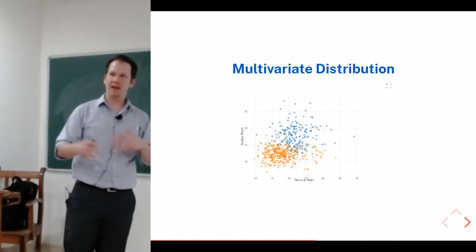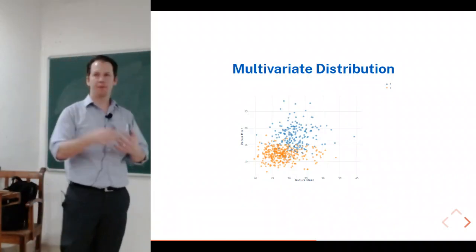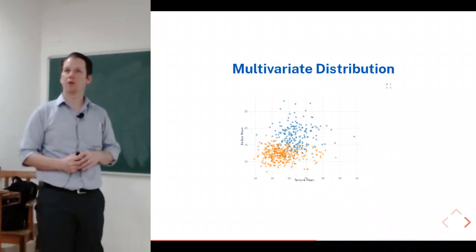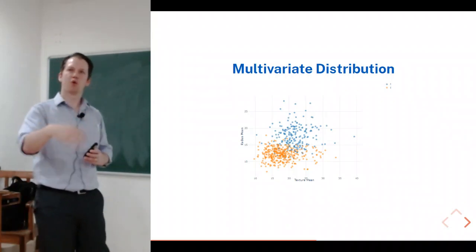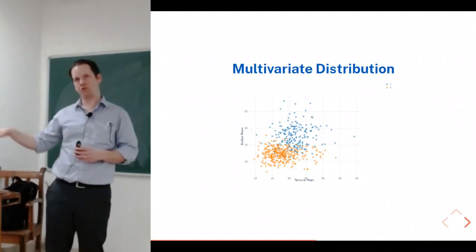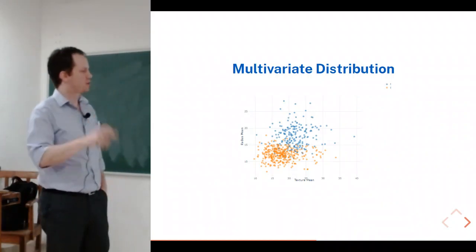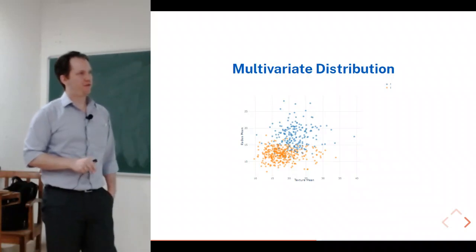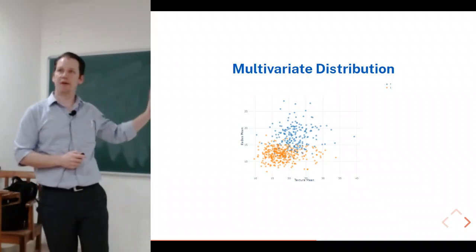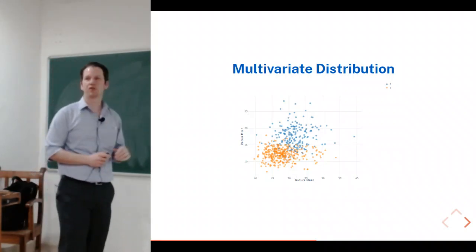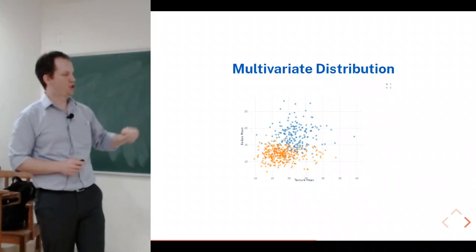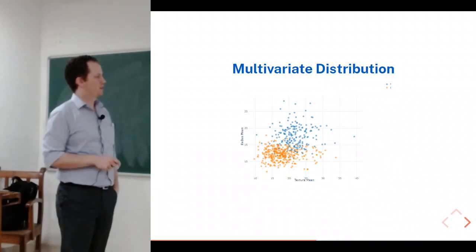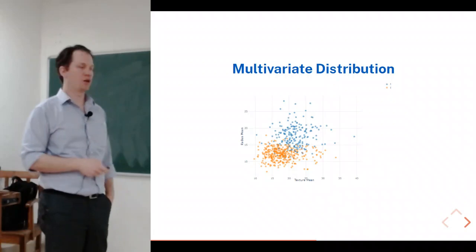As you add features up to a certain point, you get better separation because you're using more dimensions and more information. There's a limit — something called the curse of dimensionality, where as you add more features, performance eventually starts to drop off. But if you calibrate your system correctly, you can identify how many features to use. This example shows two dimensions, but mathematically there's no reason you can't go to 10, 20, or 30 dimensions.